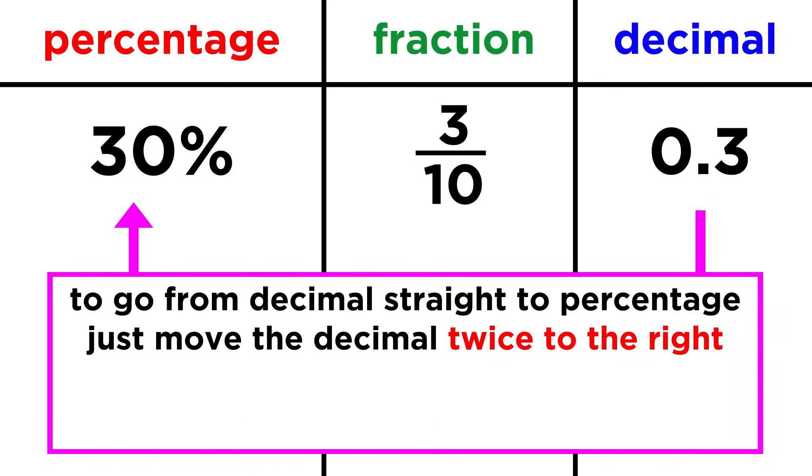To go from a decimal to a percentage, we just move the decimal twice to the right, because this is the same thing as multiplying by a hundred. So zero point eight four becomes eighty four percent.